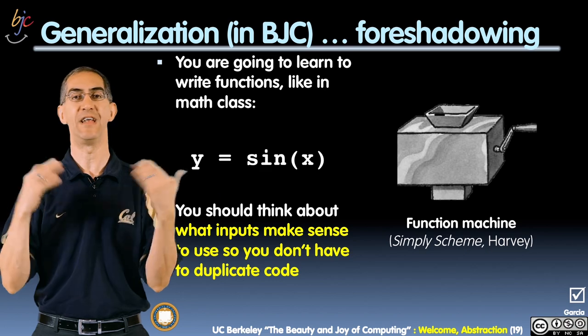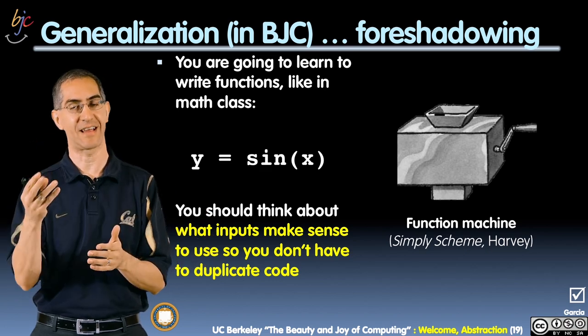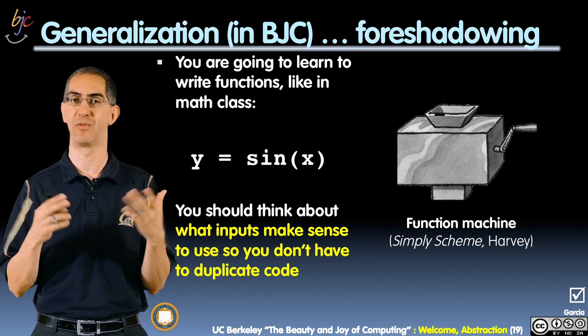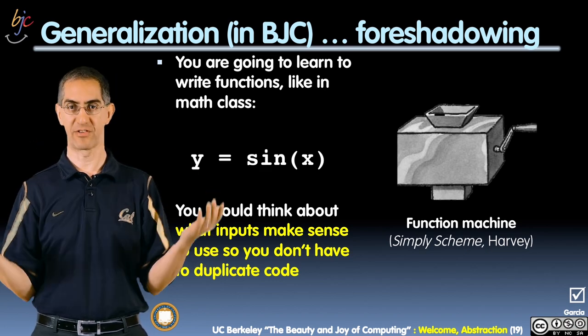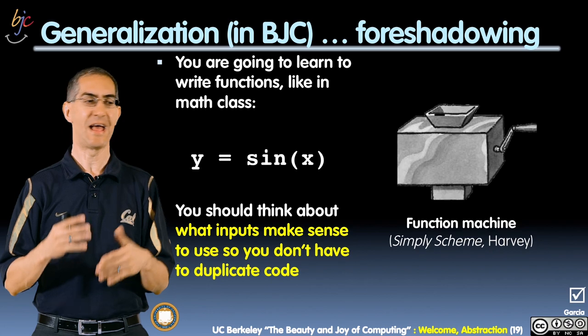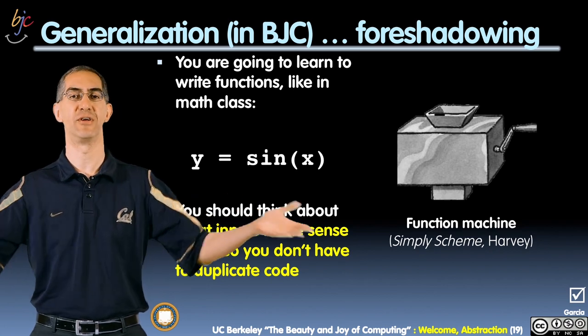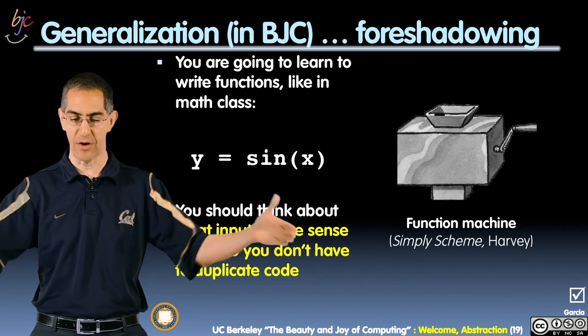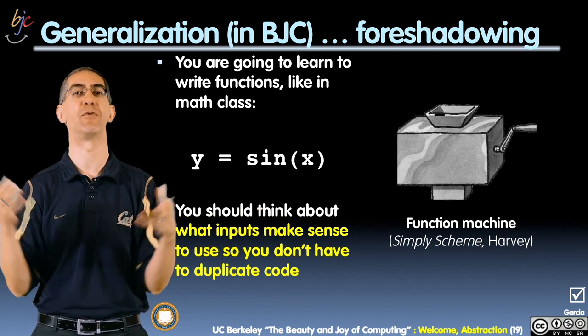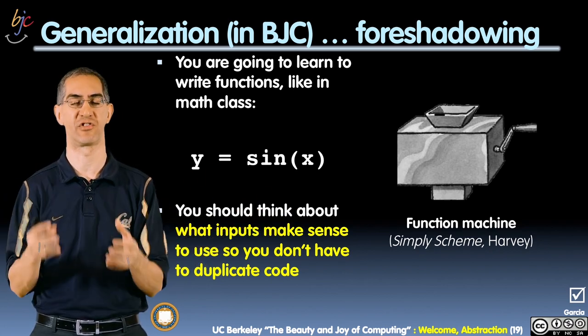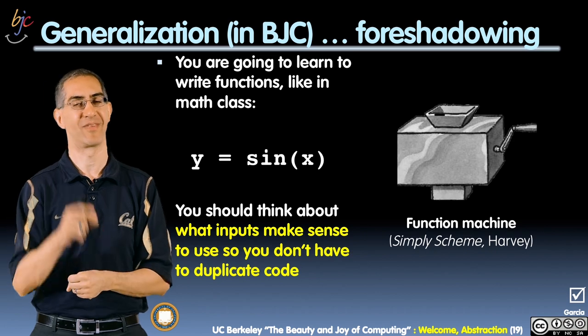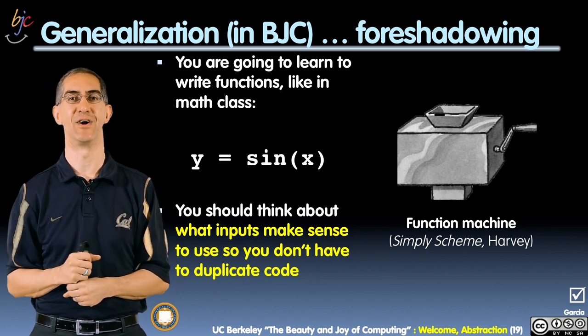So in general, abstraction — this is the second type of abstraction, which is generalization: looking at how you have lots of different instances and how you can generalize and have a more general solution to all of that. See you at the next video.